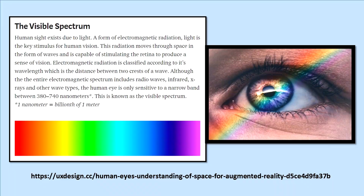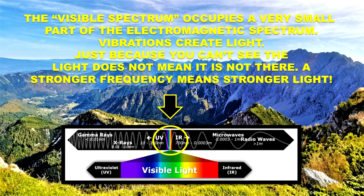Let's talk about color frequencies. Before you is an article on a design website explaining the visible spectrum. The visible spectrum occupies a very small part of the electromagnetic spectrum. Vibrations create light. Just because you can't see the light does not mean it is not there. A stronger frequency means stronger light.